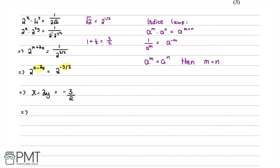We can then rearrange this: 2y is going to be equal to negative 3 over 2 minus x. Then dividing everything by 2, we have that y is going to be equal to negative 3 over 4 minus x over 2. Therefore we have found an expression for y and have completed the question.